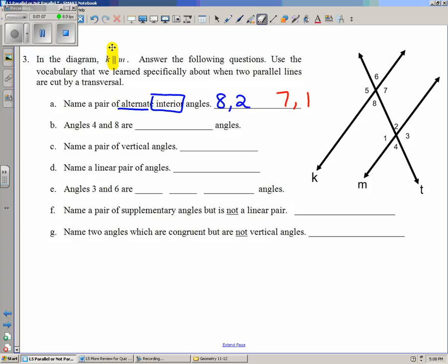Onward to part B. It says angles 4 and 8 are known as something. If you remember, I used the analogy of playing box ball in class. 4 and 8 are in the same position. They're in the lower left-hand corner of the game of box ball. And the word given to that is corresponding.